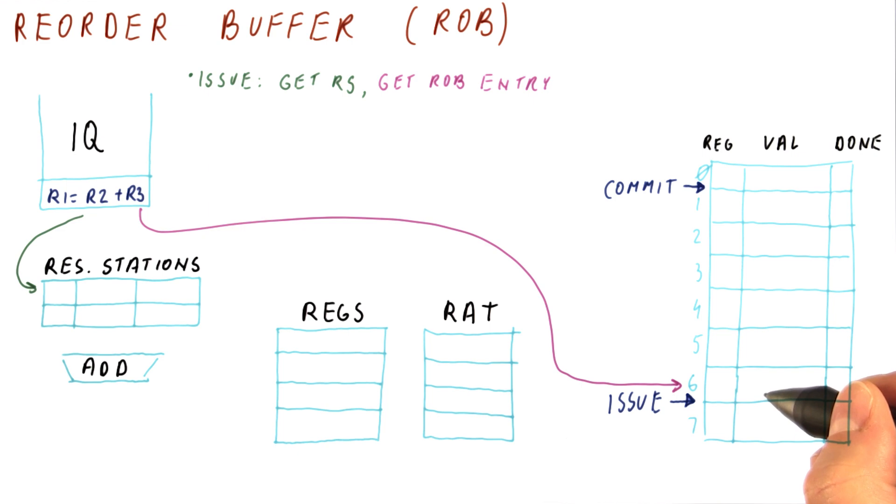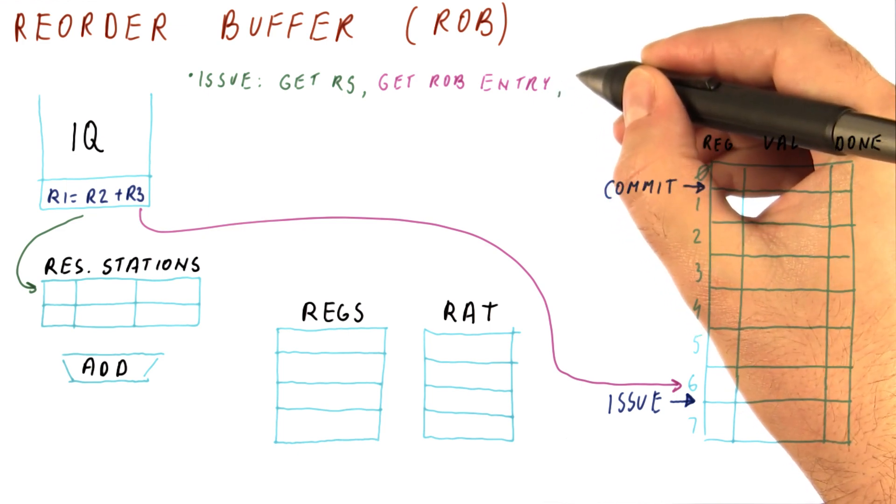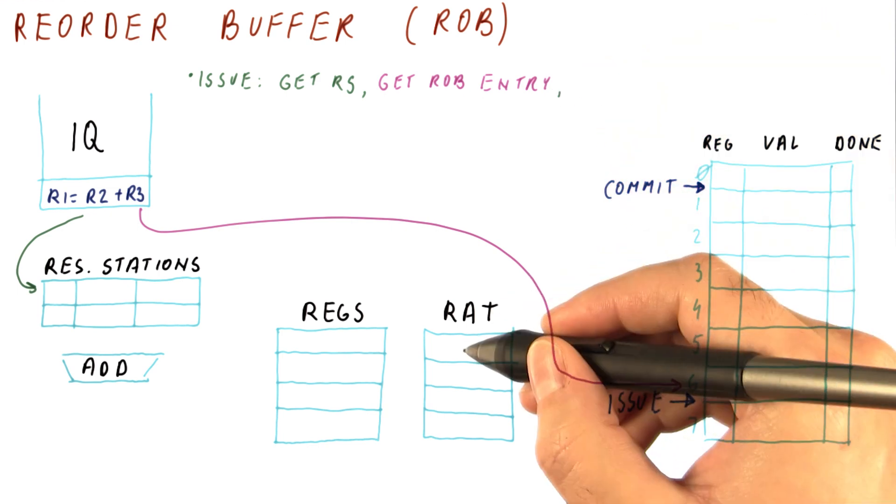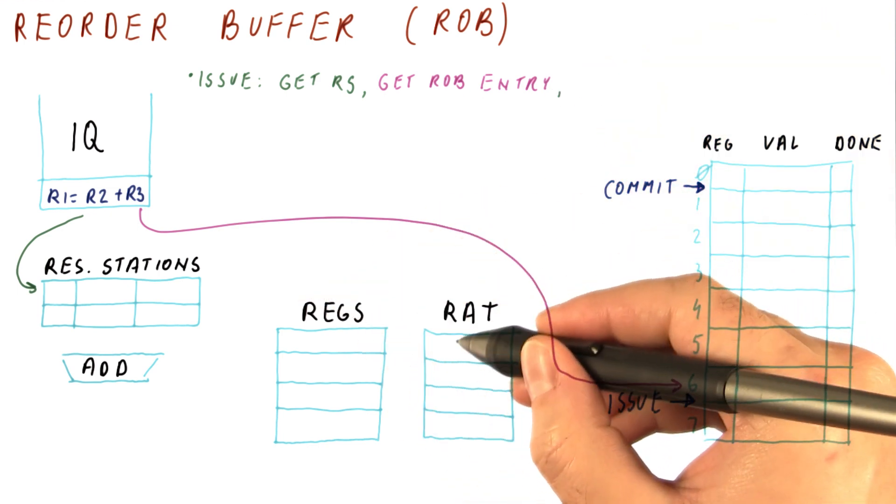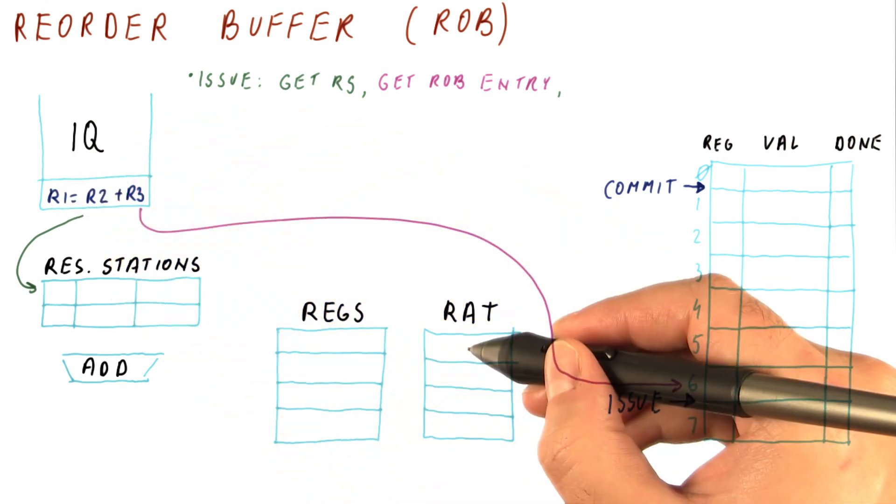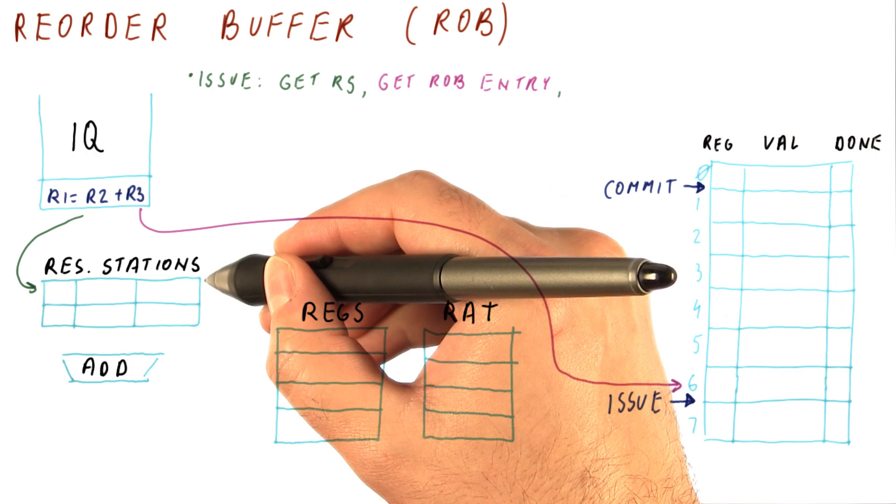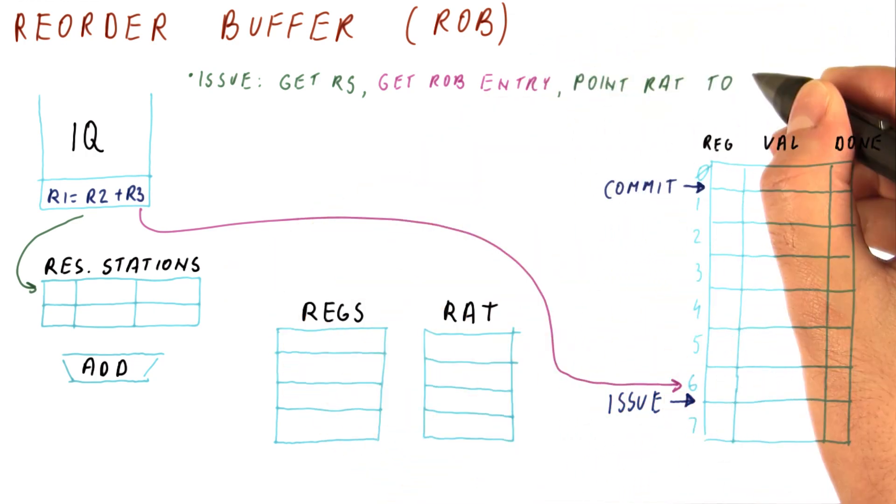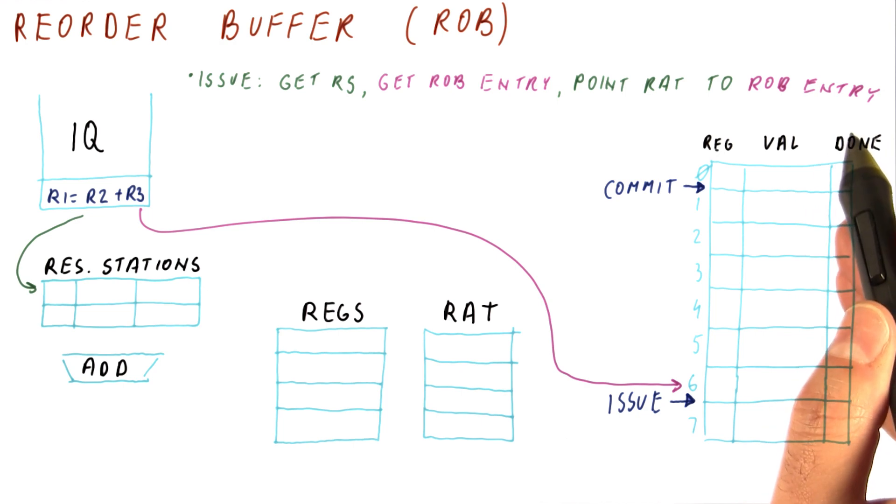So now we have seven instructions that have been issued and have not yet committed. Another thing that we had to do when we were issuing instructions in Tomasulo's algorithm is that the RAT entry for R1, the destination register of the instruction, needed to be pointed to the reservation station for the instruction. We will still need to do this pointing, but instead of the reservation station, now we point the RAT entry to the ROB entry for the instruction.